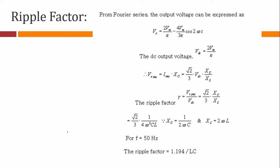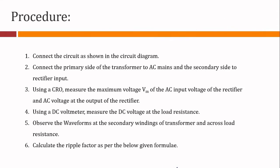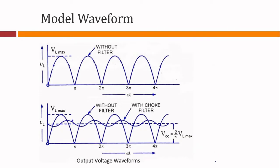Here is the derivation for the ripple factor of LC filter: R equals 1.194 divided by LC. These are the model waveforms. Without connecting the inductor and capacitor, we are expected to get a pulsating DC waveform. When we connect the inductor and capacitor as shown in the circuit diagram, the output voltage will be much smoother — and the small remaining variation is the ripple voltage.